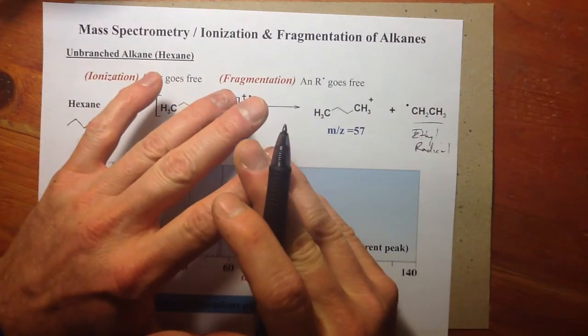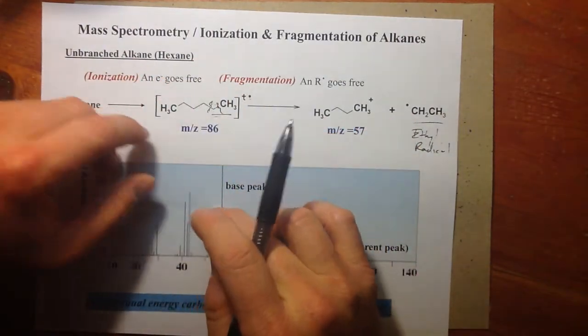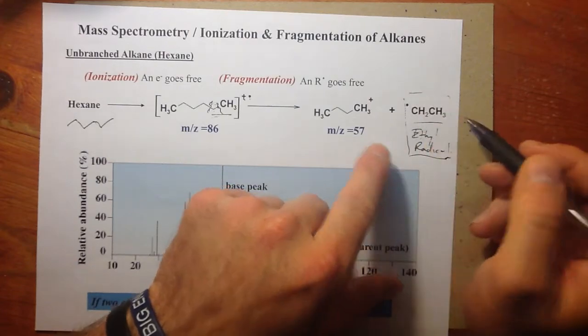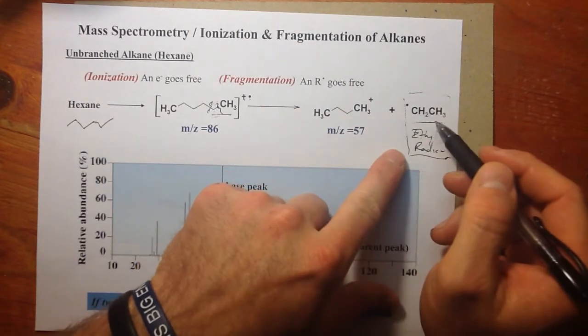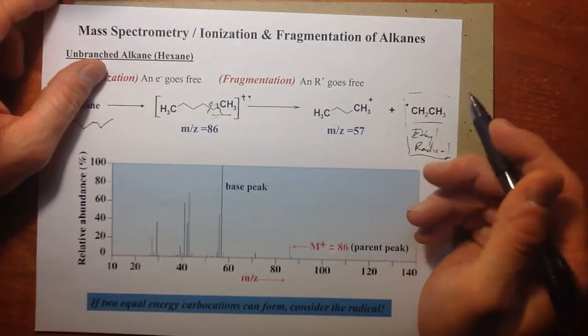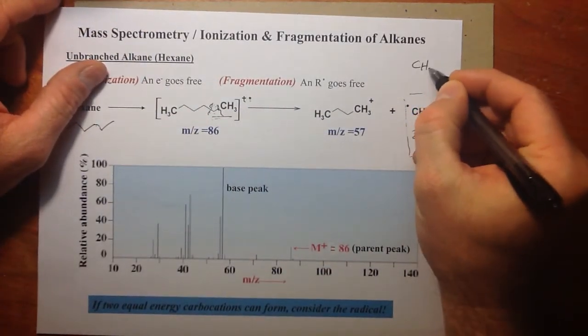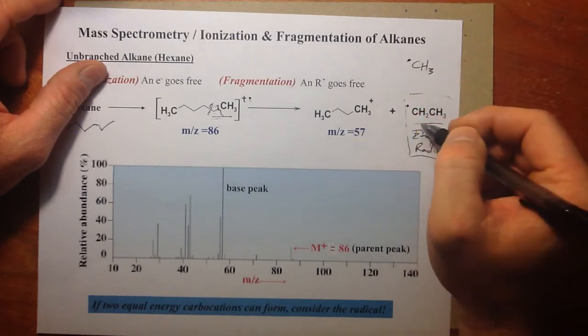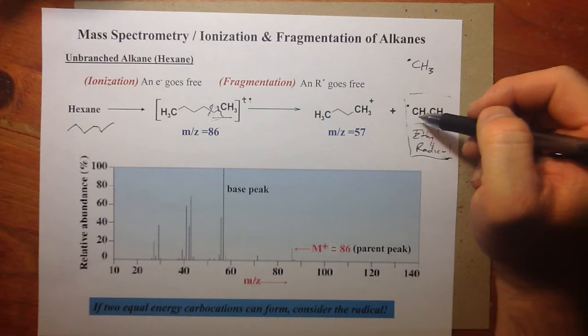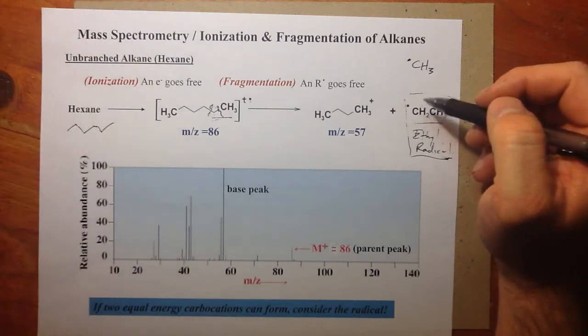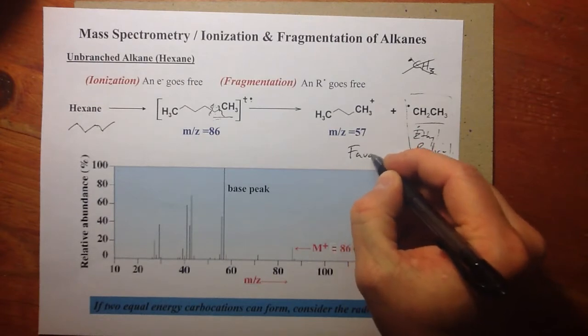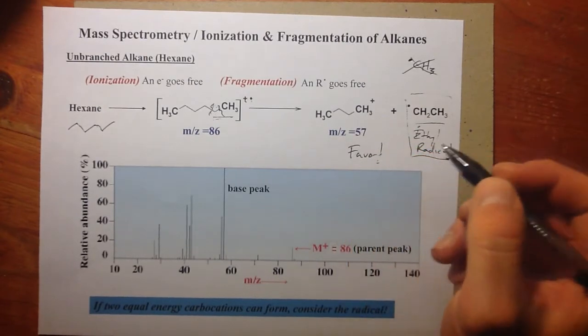If we break here, we'd have a positive charge on a primary position, or if we break here and put the positive charge on a primary position. There's no difference. So when there's no difference in the types of fragments you'd have considering the cation, try to consider fragmentation wherein you stabilize the radical. And whatever's good for a cation is good for a radical. So we'd rather have a radical on a primary position than on just a methyl position. CH3 radical is not as stable as an ethyl radical, just as a CH3 cation would not be as stable as an ethyl cation.